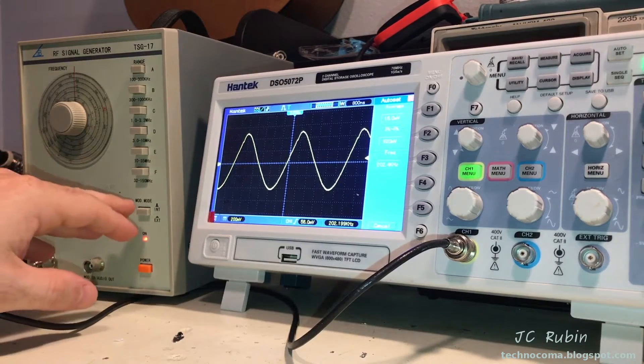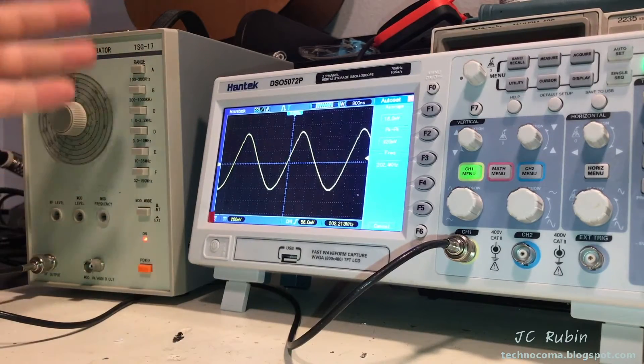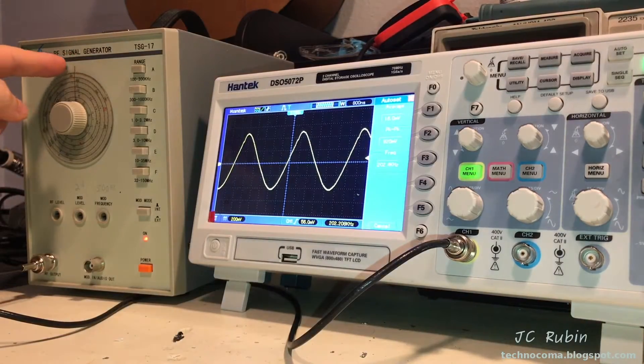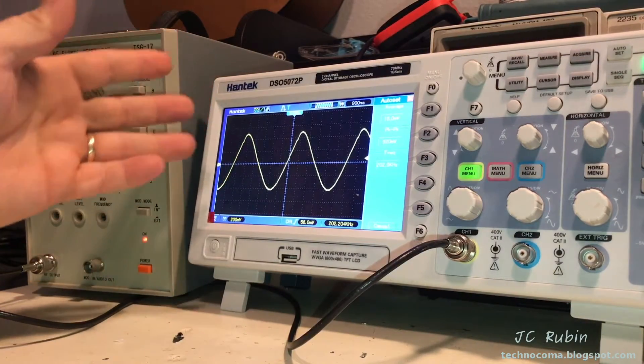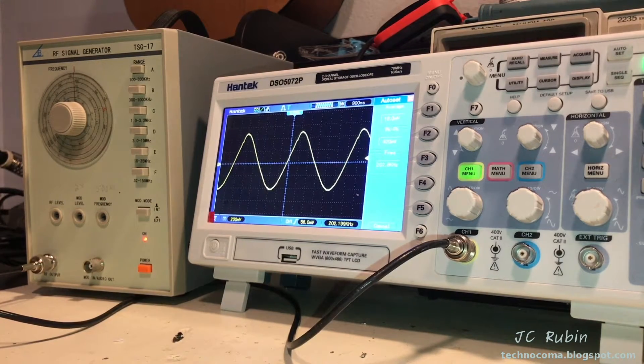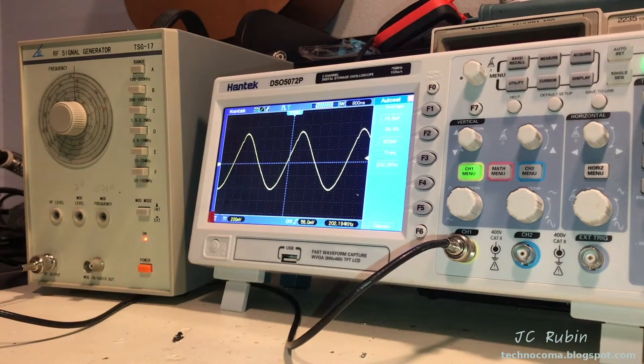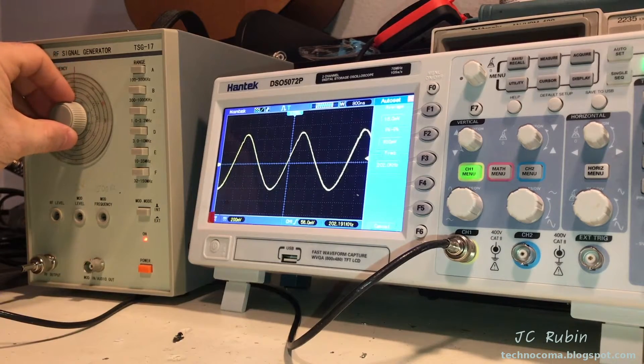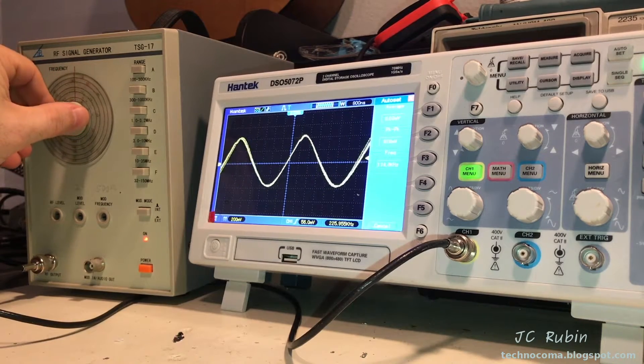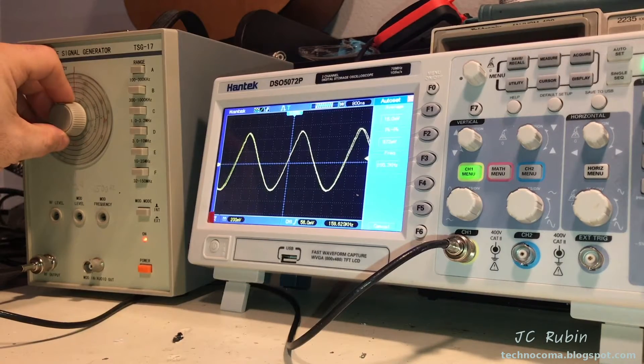And finally, just to circle back one last time, with modulation turned off using this as a sine wave generator, I'm here on range A just under 200 kilohertz. The sine wave looks like garbage. This isn't a sine wave, almost looks like a sawtooth wave. Again, this is not a class A sine wave generator. This is garbage. You get what you pay for. So if you're looking for something that's supposed to generate a nice sine wave, don't get this. That's not what this is for.